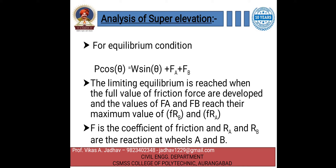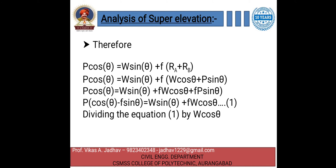Substituting these values, where f is the coefficient of friction and Ra and Rb are the reactions at wheels A and B: P cos θ = W sin θ + f(Ra + Rb). Substituting the values of Ra and Rb gives P cos θ = W sin θ + fW cos θ + fP sin θ. Simplifying: P cos θ − fP sin θ = W sin θ + fW cos θ, which gives P(cos θ − f sin θ) = W(sin θ + f cos θ).